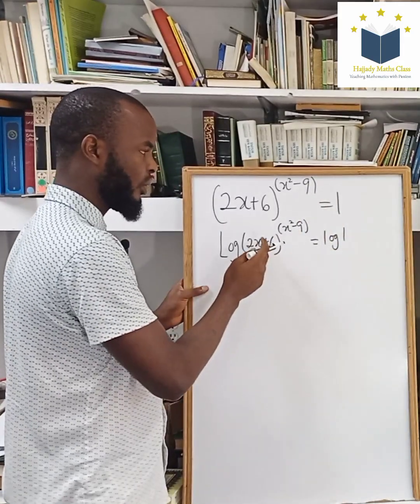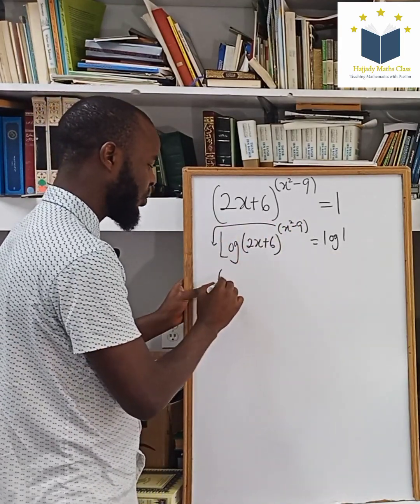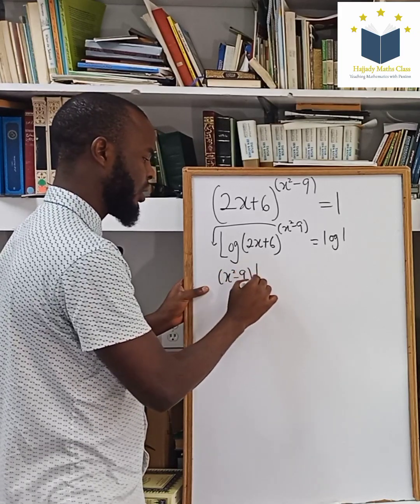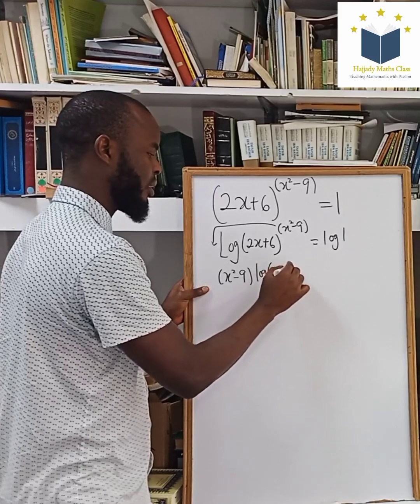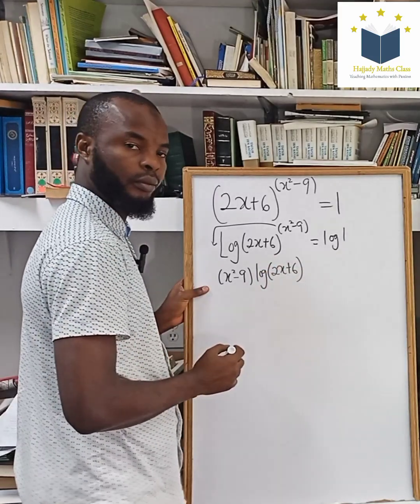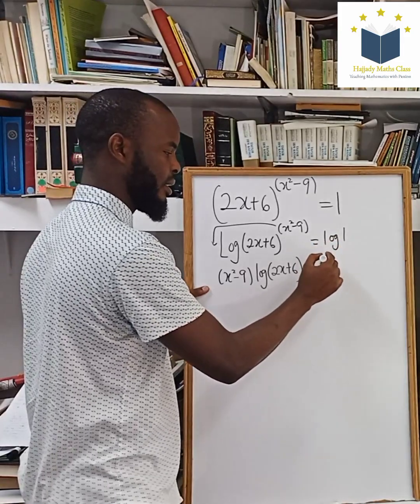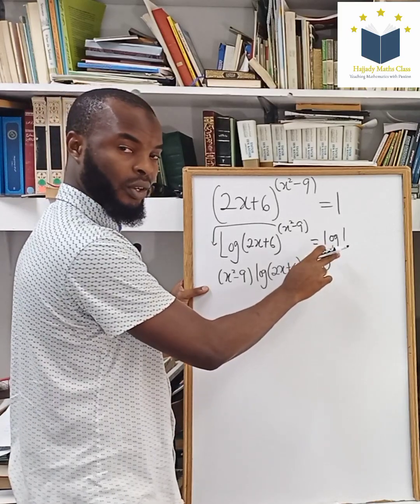So the rule of log reading, then we can move this down here. So here I'm going to have x squared minus 9 log 2x plus 6 equals log 1 is the same thing as 0, provided it isn't the same, which is natural log.